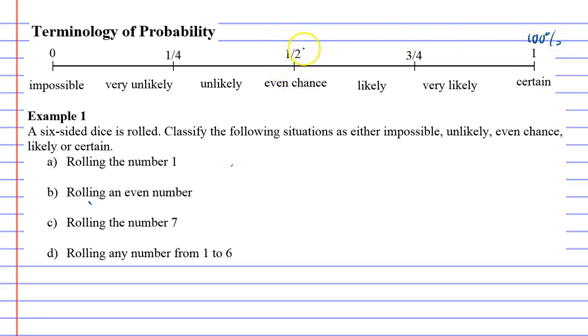We've also got even chance, which is a half chance of happening or a 50% chance of happening, and we have other descriptors at different points in our scale. So we'll get into our example.